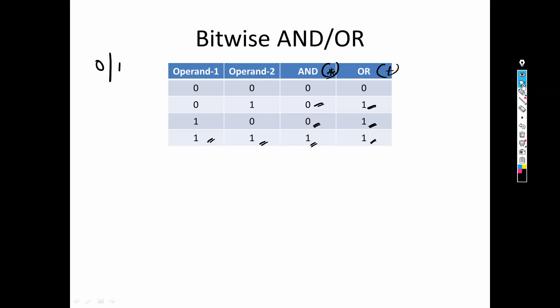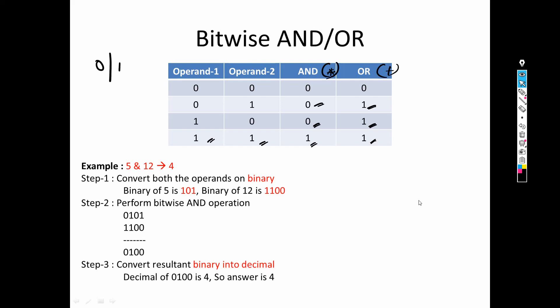Now let's understand how it works with an example. We will perform the bitwise AND operation on 5 and 12, and we should get the answer 4. First, we need to convert both operands into binary. Binary of 5 is 101 and binary of 12 is 1100. If you are not comfortable converting decimal to binary, a link to that video is in the description box.